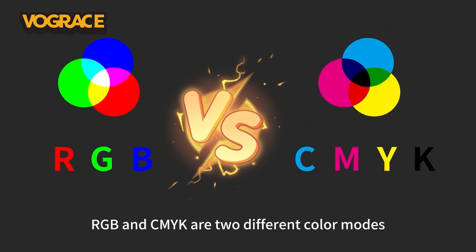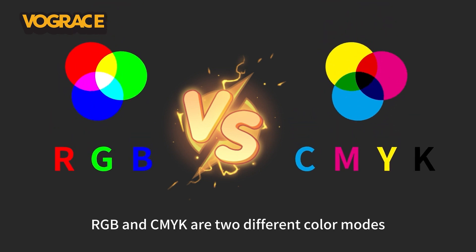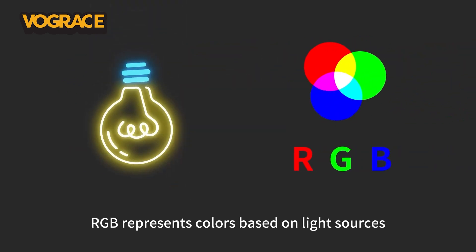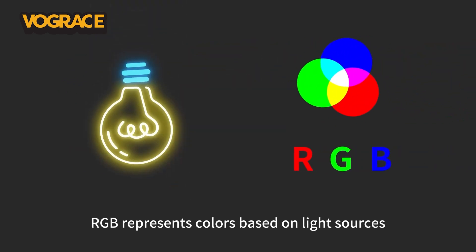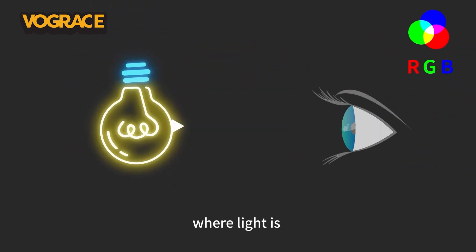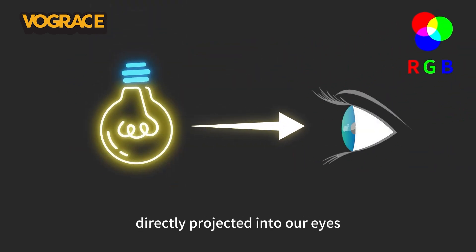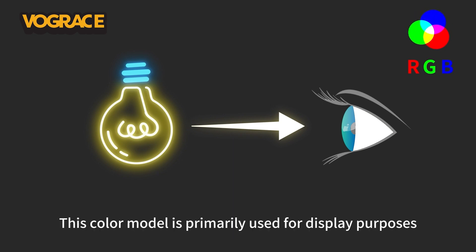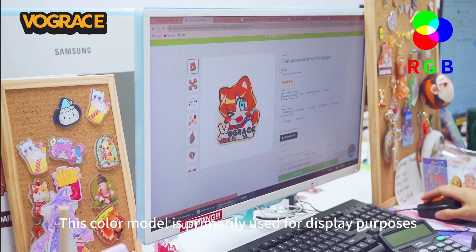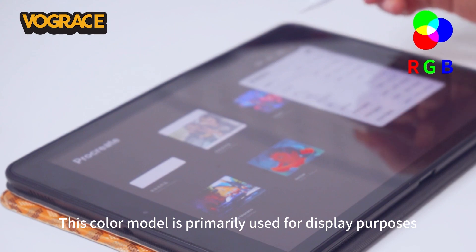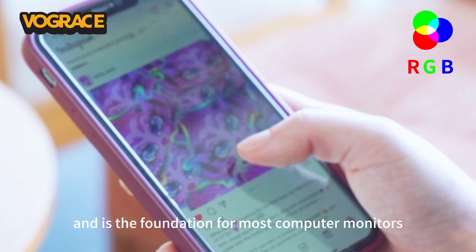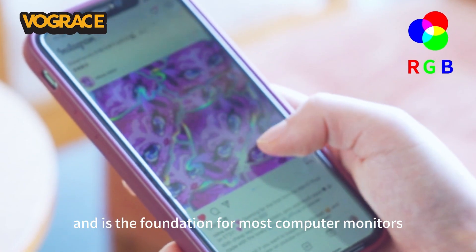RGB and CMYK are two different color modes. RGB represents color based on light sources, where light is directly projected into our eyes without any reflection. This color mode is primarily used for display purposes and is a foundation for most computer monitors.